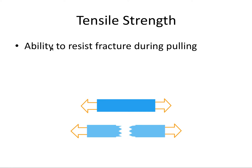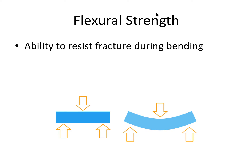Tensile strength is the ability to resist fracture during pulling. It's like compressive strength in that we're talking about the ability to resist fracture, but instead of the force arrows pointing towards the material, they're now pulling away from it. Flexural strength is our third type — the ability to resist fracture during bending, like the pontic and connector of a bridge during occlusal function.